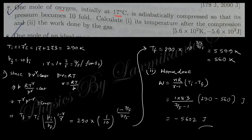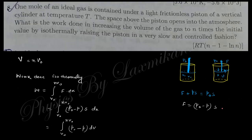One mole of oxygen initially at 17°C is adiabatically compressed so that the pressure becomes tenfold. Using the adiabatic relation between pressure and temperature: T·P^((1-γ)/γ) = constant, the final temperature T_f can be calculated. With γ for diatomic oxygen, T_f comes out to approximately 560 K. The work done equals nR(T_i - T_f)/(γ - 1).